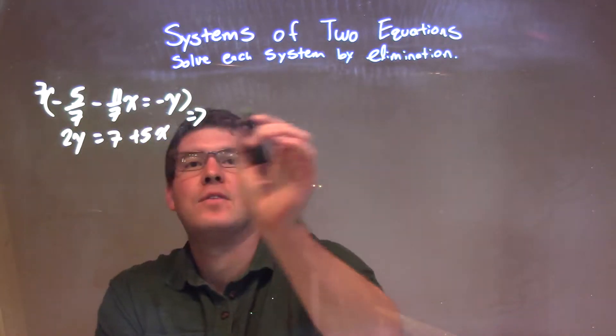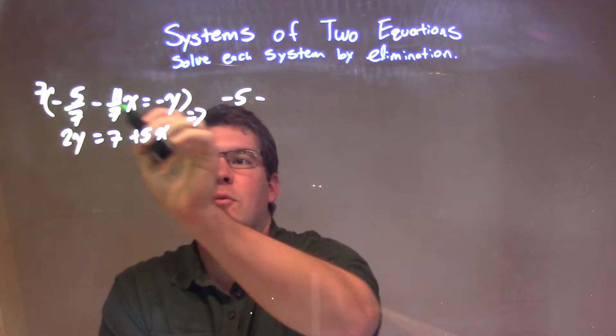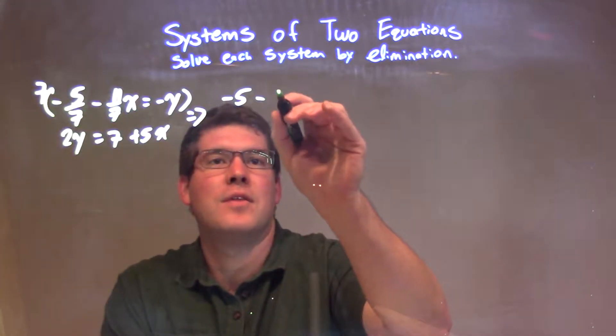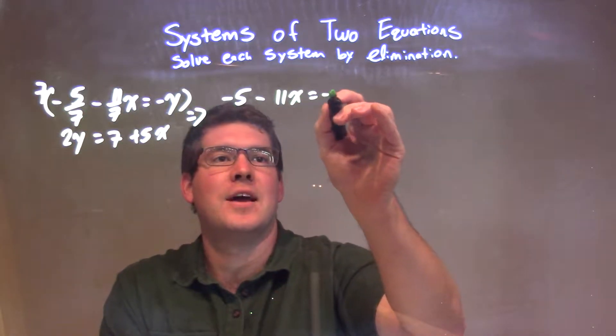7 cancels out the 7, so we have negative 5, and then minus 11x. 7 will cancel out the denominator of 7, so 11x, which makes it nice, and then 7 times negative y is negative 7y.